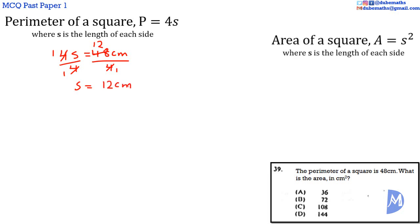The area of a square equals s squared. We know s equals 12 cm, so the area equals 12 cm squared. 12 squared is 144, so we get 144 cm squared. The answer is D.